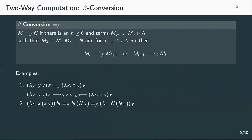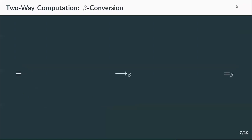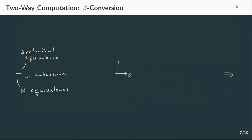So far we've seen a few operators for comparing lambda terms: the equals sign for syntactical equivalence, extended to substitution execution and alpha convertible terms; then one-step and many-step beta reduction, denoted by the arrow with and without a star respectively; and finally beta conversion, denoted by the equality sign with a beta below it.